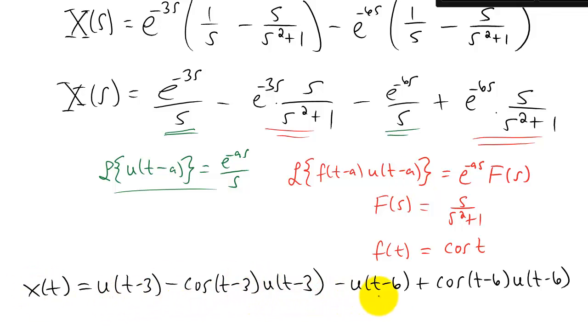So I didn't do this last step in the shortest way possible. You'll notice that each of these first two terms have a U of T minus three step function attached to them. Clearly we should have expected that from the beginning because each one of these terms in the Laplace transform have an exponential to the negative three S next to them. So the shortest way to do this problem may not have been to multiply this thing out and deal with four different terms. But I wanted you to see each one of these terms done separately.